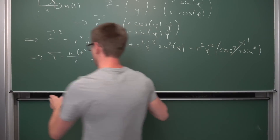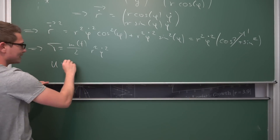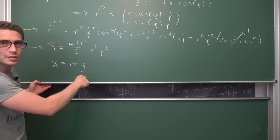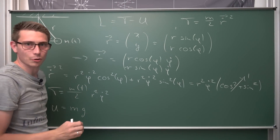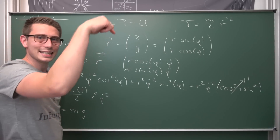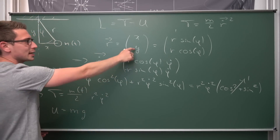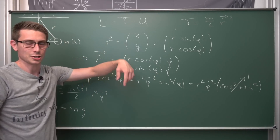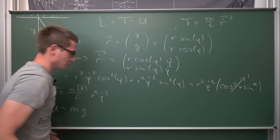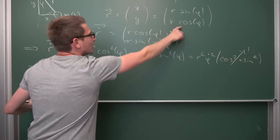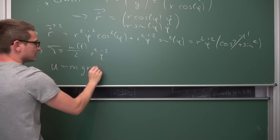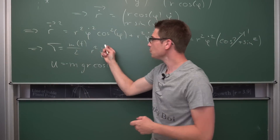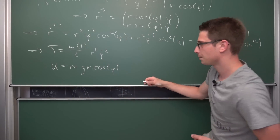Now what about our potential energy? Our potential energy is defined as m(t) times the gravitational acceleration g times the height of our mass in the system. Since our pendulum is hanging in the downwards y direction, we take our y coordinate with a negative sign in front, because we have a negative potential energy — it's underneath our coordinate system's origin. So the potential energy is negative m(t) times g times r times cosine of phi. Those are our two energies, which we can now take the difference of.